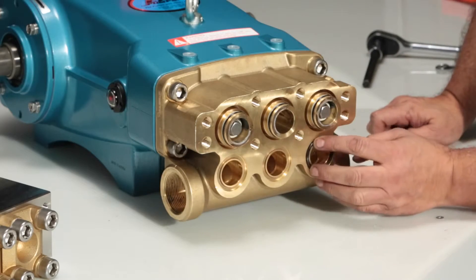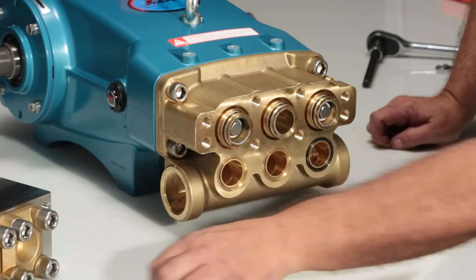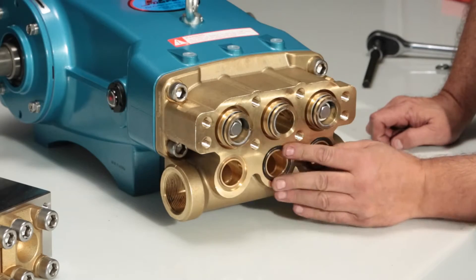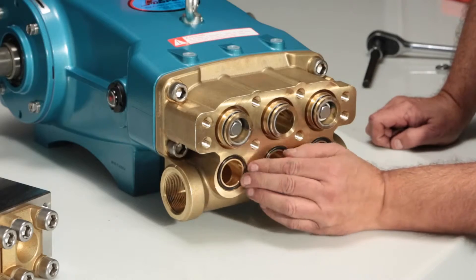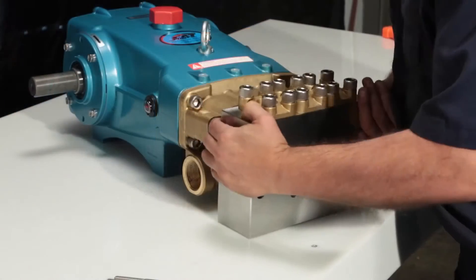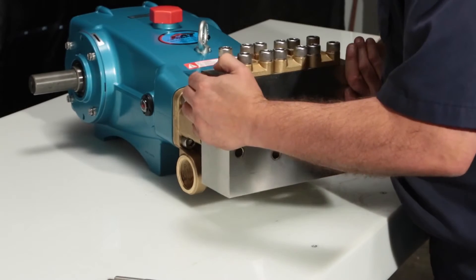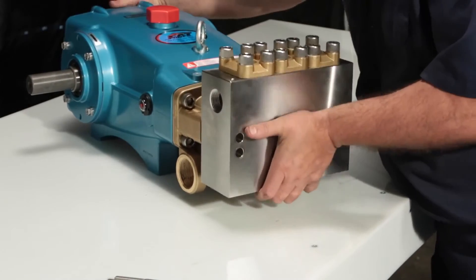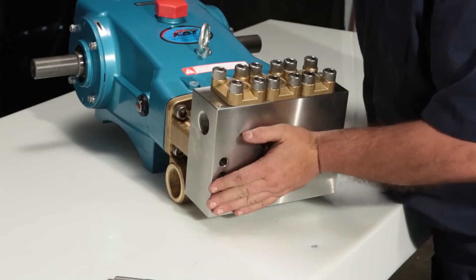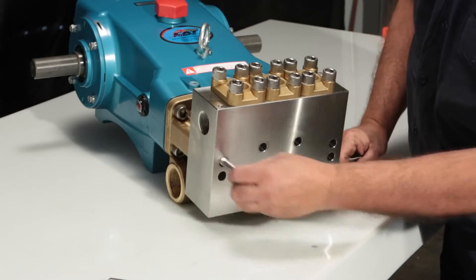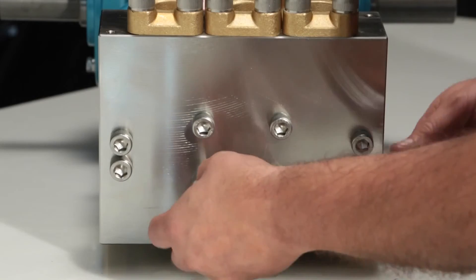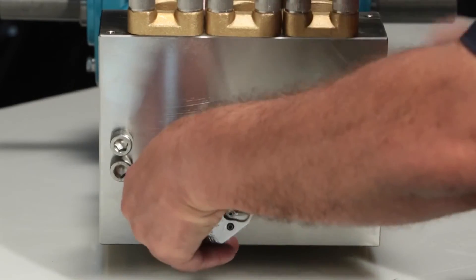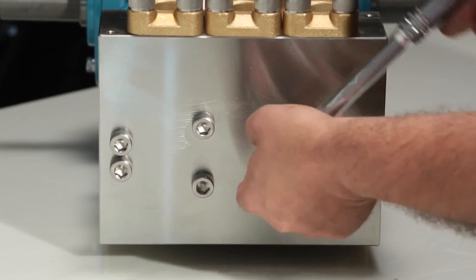Reinstall or replace inlet manifold o-rings. Next, install the discharge manifold. Install the eight manifold bolts using the proper sequence shown here. Tighten to proper specification.